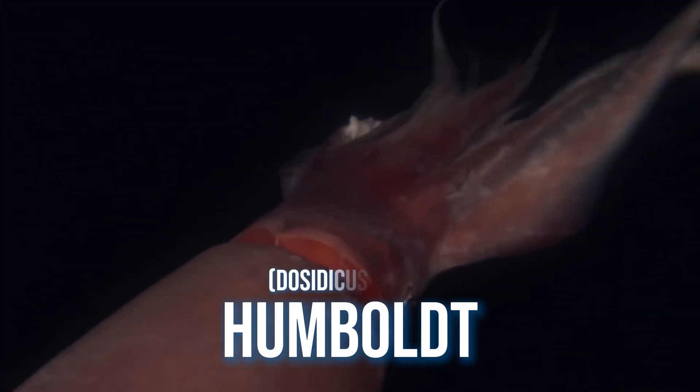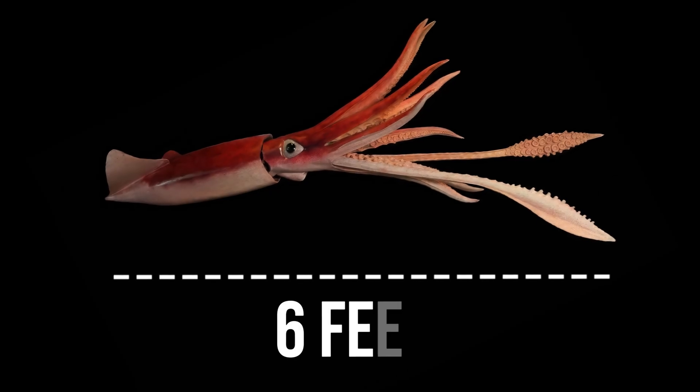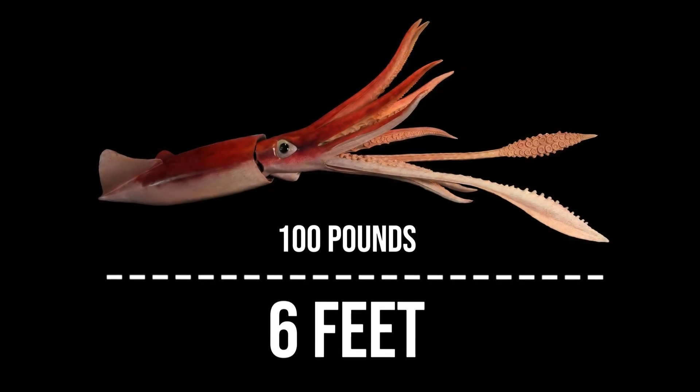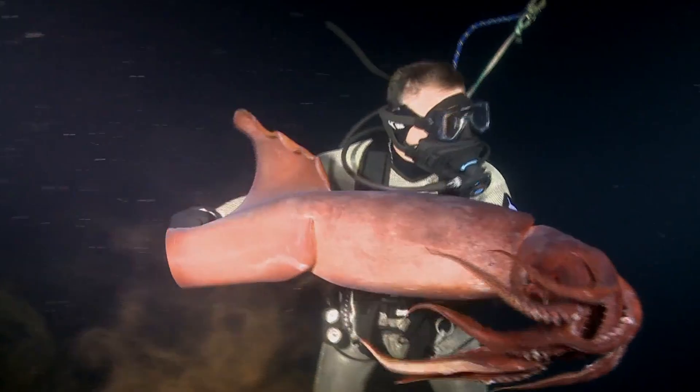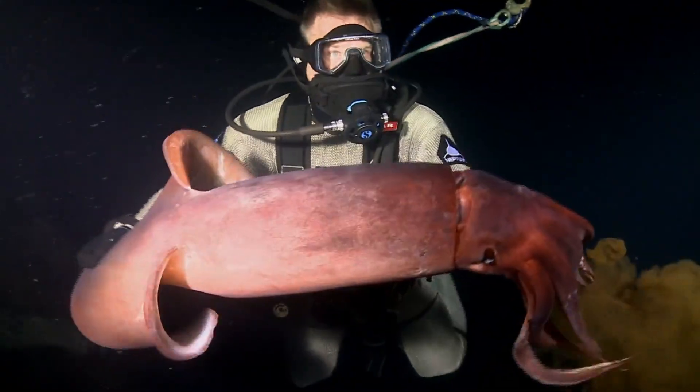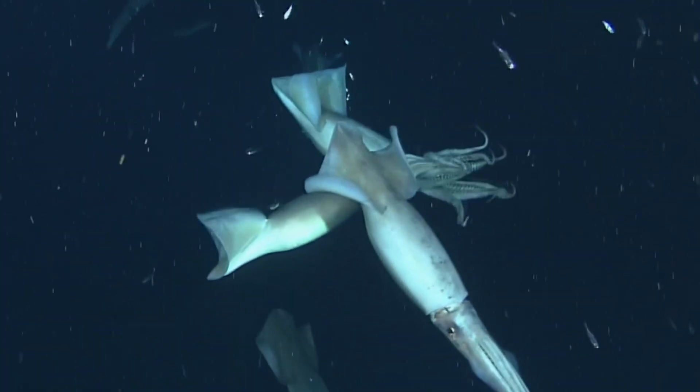Around 3,000 feet down, the Humboldt squid, Docidicus gigas, emerges. Stretching over six feet long and weighing up to 100 pounds, it's the first squid in its family to develop sharp, horn-like hooks, strong enough to rip through fish flesh. They're cannibalistic predators attacking fish, and even weaker members of their own species.